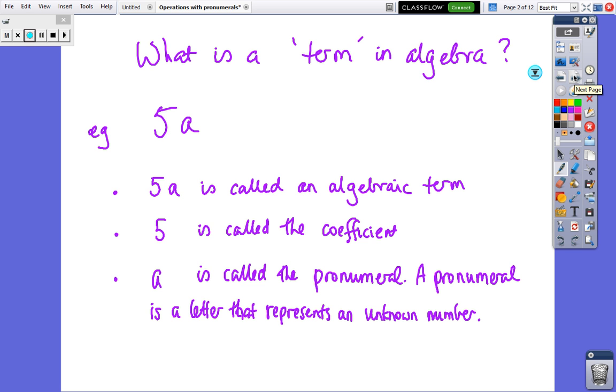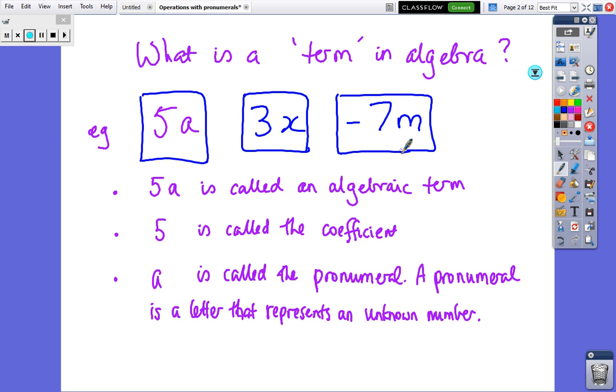So we start off with what's a term in algebra. We've seen terms 5a, 3x, minus 7m - all of those we call them terms. In the first one, 5a is called the algebraic term, the number at the front is called the coefficient, and the letter, in this particular case a, is called a pronumeral. A pronumeral is a letter that represents a number that we just don't know yet.